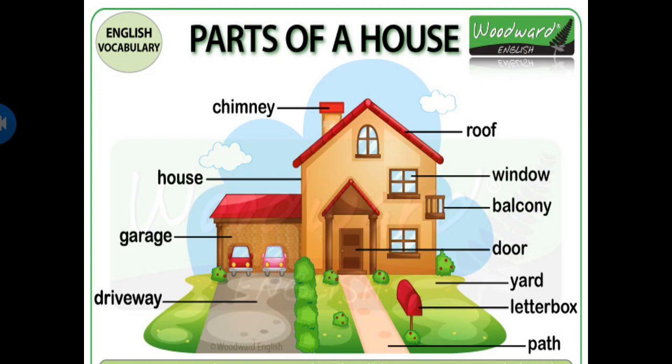All parts of our house help us and protect us from different things. The roof protects us from heavy sunlight and rain. Windows allow cold air and light to come inside our house. The door allows us to enter our house. The chimney takes out hot air from our house. These are the different parts of a house, children, and each and every part is very useful.